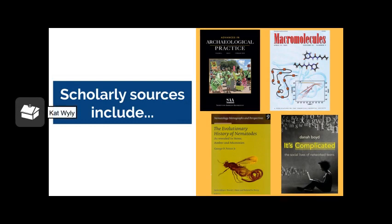These are some examples of scholarly sources. Here we have the journals Advances in Archaeological Practice and Macromolecules, as well as the books The Evolutionary History of Nematodes and It's Complicated: The Social Lives of Network Teens. Journals house a variety of academic articles that fall into a particular subject discipline. These are often released quarterly or monthly, but rarely more frequently than that.